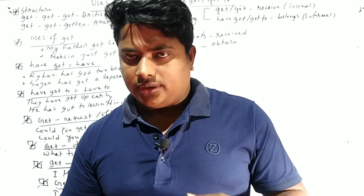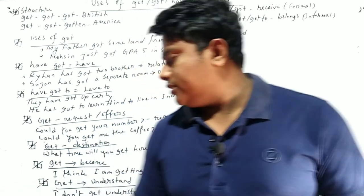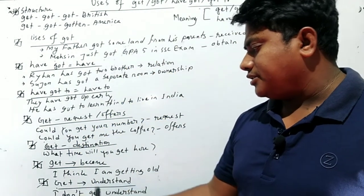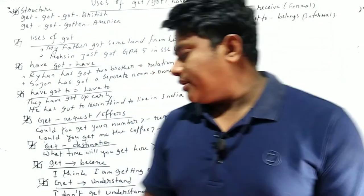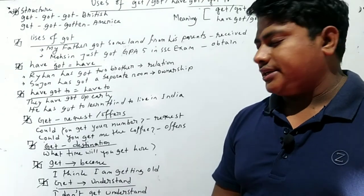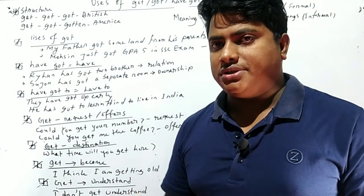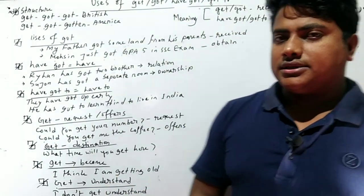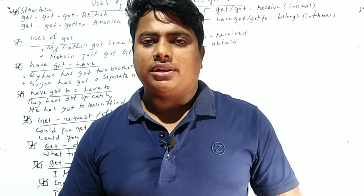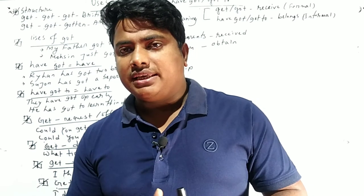Get does not express any received relations or other things. The sentence expresses become or the happening that usually happens. Then another use: get means understand. I do not get understand means I do not understand. So in general cases, get is sometimes used in sentences.